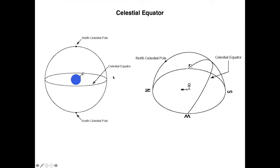How does the celestial equator fit in this picture? You have the observer on the earth — the south celestial pole is here, the north celestial pole is here, and the celestial equator is here. To pass from local coordinates to equatorial coordinates, you simply rotate the system so that the observer is vertical. The celestial equator will then have an inclination with respect to the local horizon.